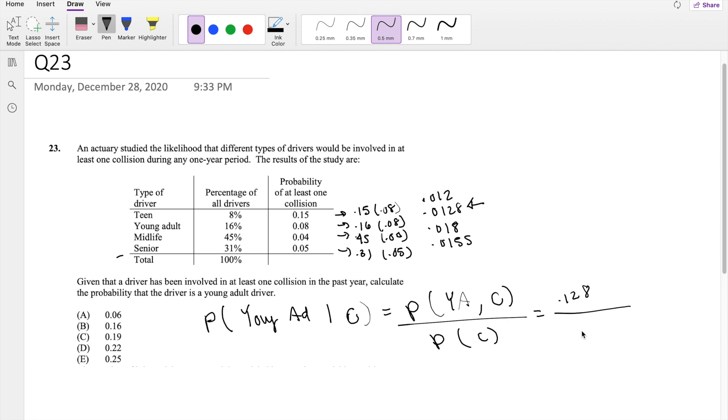And the probability that they have a collision, we just have to add all of these up: 0.012, plus 0.0128, plus 0.018, plus 0.0155.